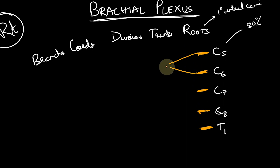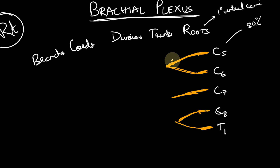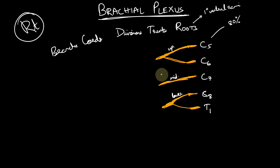C5 and C6 together form the upper trunk. C7 remains as such and forms the middle trunk. C8 and T1 join together to form the lower trunk. So these are known as the upper, middle, and lower trunks.